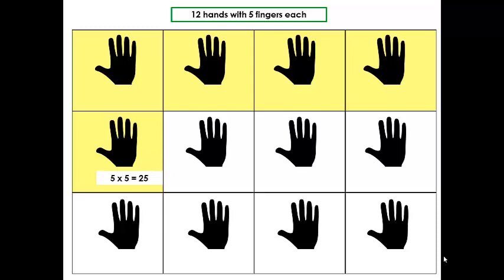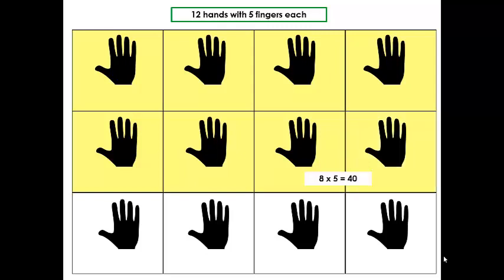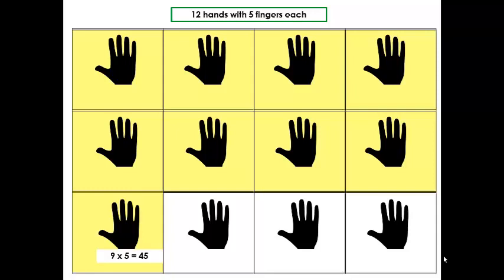Five hands with five fingers will give us 25 fingers. Six hands with five fingers will give us 30 fingers. Seven hands with 5 fingers will give us 35 fingers. Eight hands with 5 fingers will give us 40 fingers.